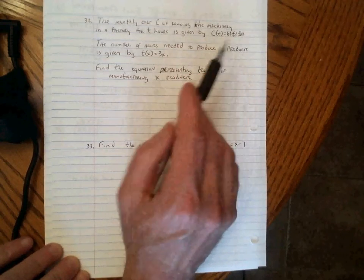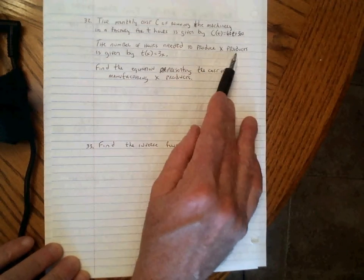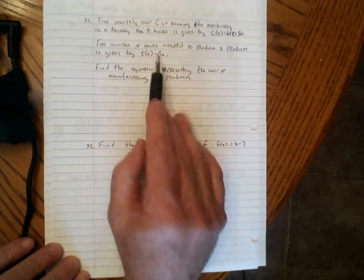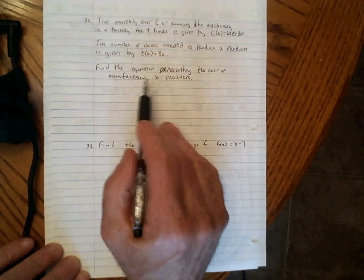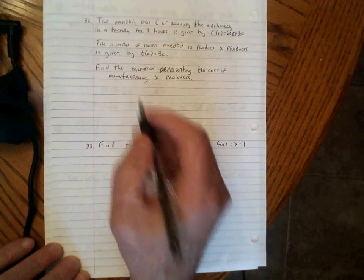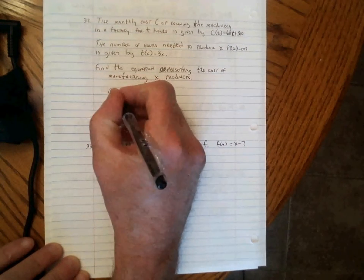The number of hours needed to produce X products is given by T of X equals 3 times X. We're to find the equation representing the cost of manufacturing X products. That's going to be the function C of T of X.